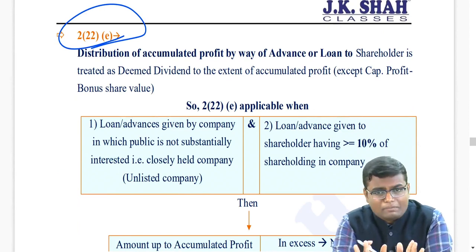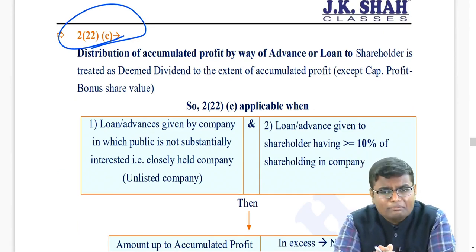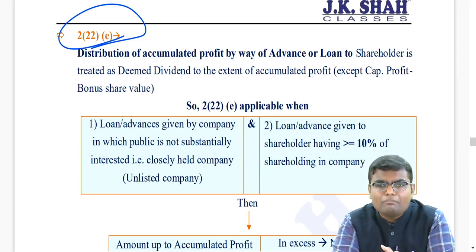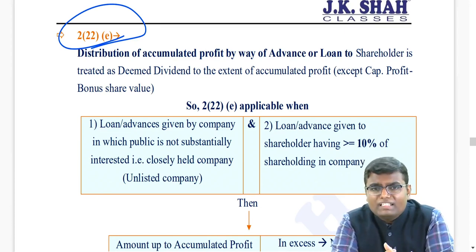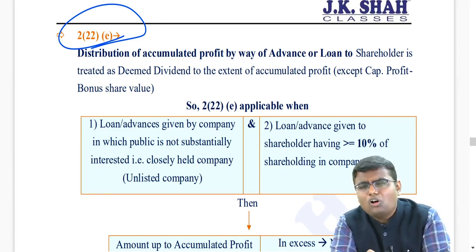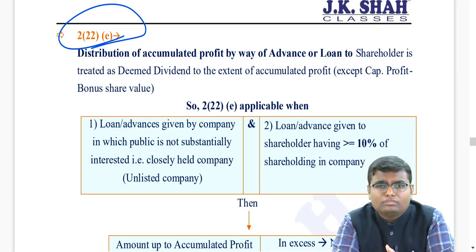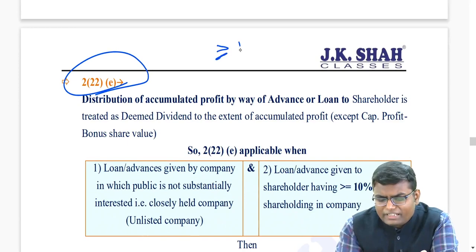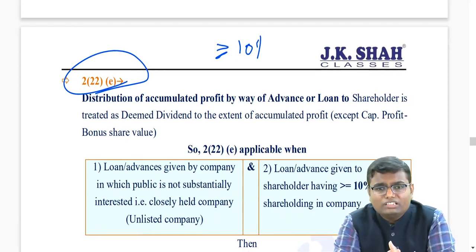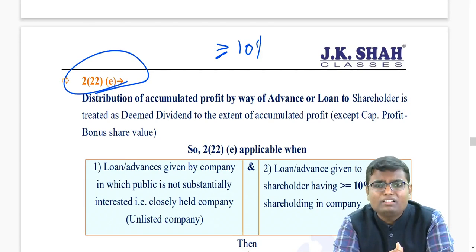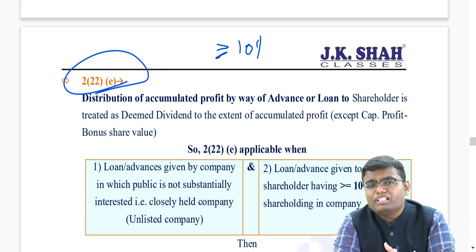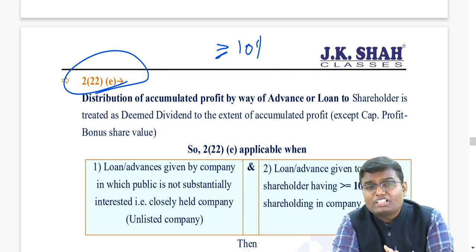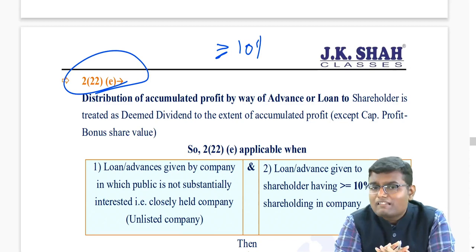The more important topic is section 2(22)(e). This is applicable only to a company in which the public is not substantially interested - meaning a closely held company, which we can also say is an unlisted company. It may be an unlisted private company or unlisted public company. If such a company gives a loan or advance to a shareholder who has at least 10% shareholding in the company, then the amount of loan or reserve and surplus, whichever is lower, will become deemed dividend for that shareholder.